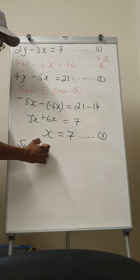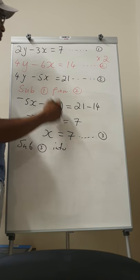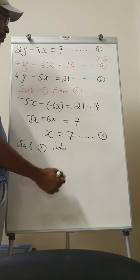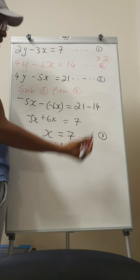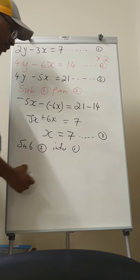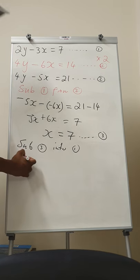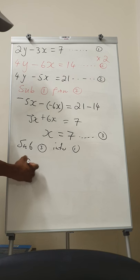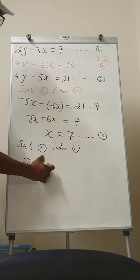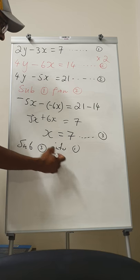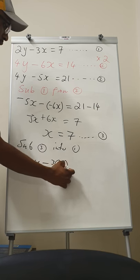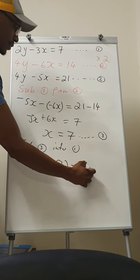And then therefore substitute equation number three into any equation. Let's substitute it into equation number one. So it means therefore you can have 2y minus 3 times x, which is 7, equal to 7.